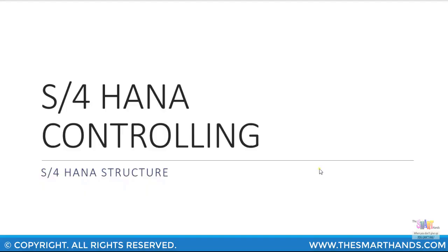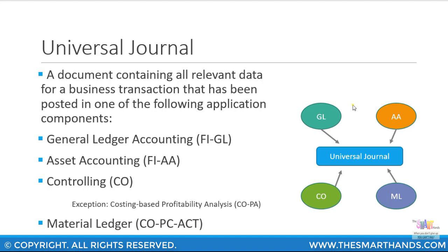In this presentation we look at the S/4HANA structure. One major difference between SAP ERP and SAP S/4HANA is the universal journal. This universal journal acts as a common table between general ledger accounting, asset accounting, controlling, material ledger, and so on.